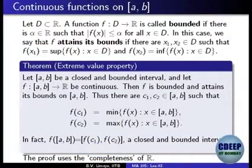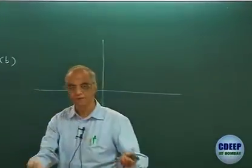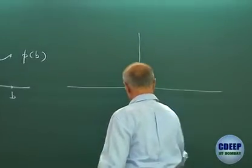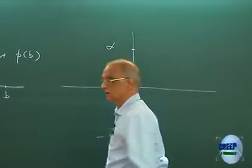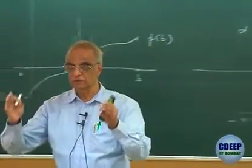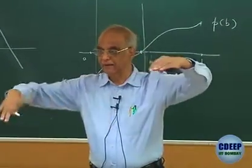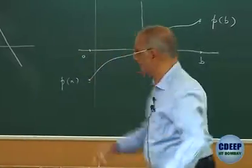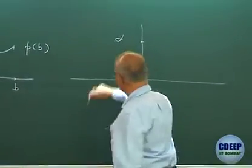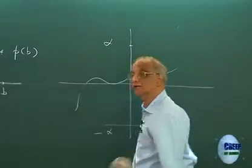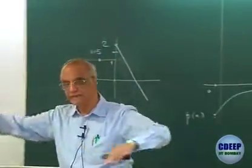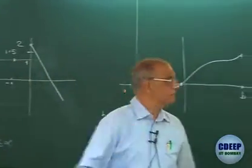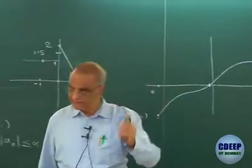If you look at the picture of a bounded function, always keep the geometric idea in mind. Minus α is here, α is here. |f(x)| ≤ α means f(x) lies in the band from minus α to plus α. So if you draw the graph of the function, whatever the domain, it will lie in this band — it will never go above α or below minus α. Bounded means lying between two horizontal straight lines. We say the function attains its bound if the supremum of the function over the domain is actually taken — that is, it becomes the maximum.